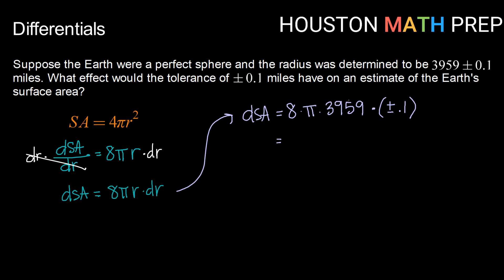All right, so 8 times 3959 times 0.1 gives us that this is plus or minus 3167.2π, which is about 9950, so plus or minus 9950 square miles.